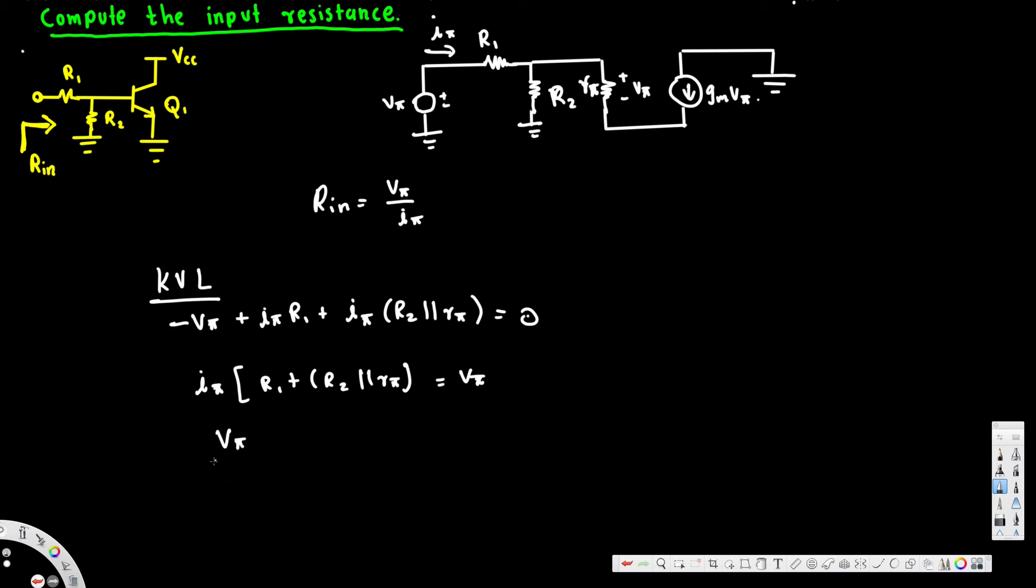And V phi over I phi is what we are interested in because that's equal to R in. V phi over I phi will be equivalent to R1 plus R2 parallel R phi. Therefore R in is equal to R1 plus R2 parallel R phi.